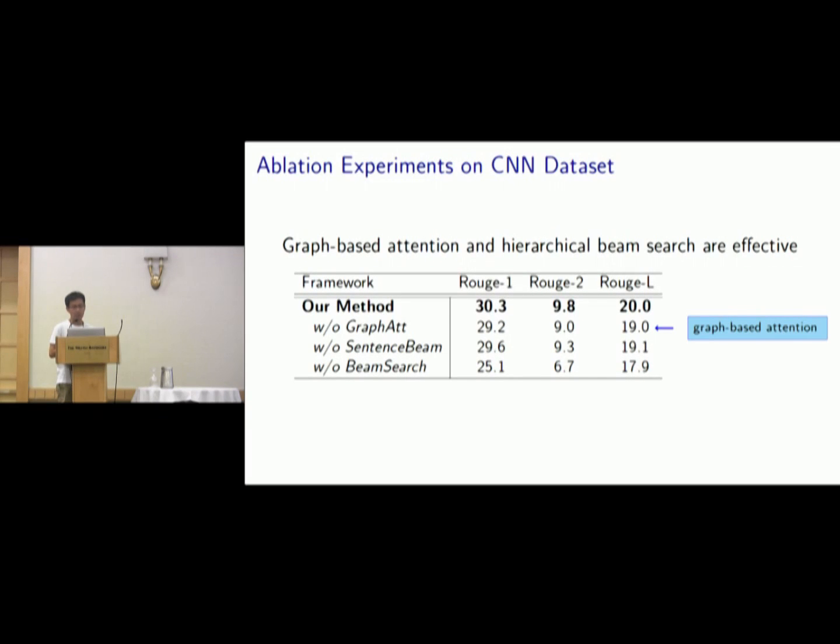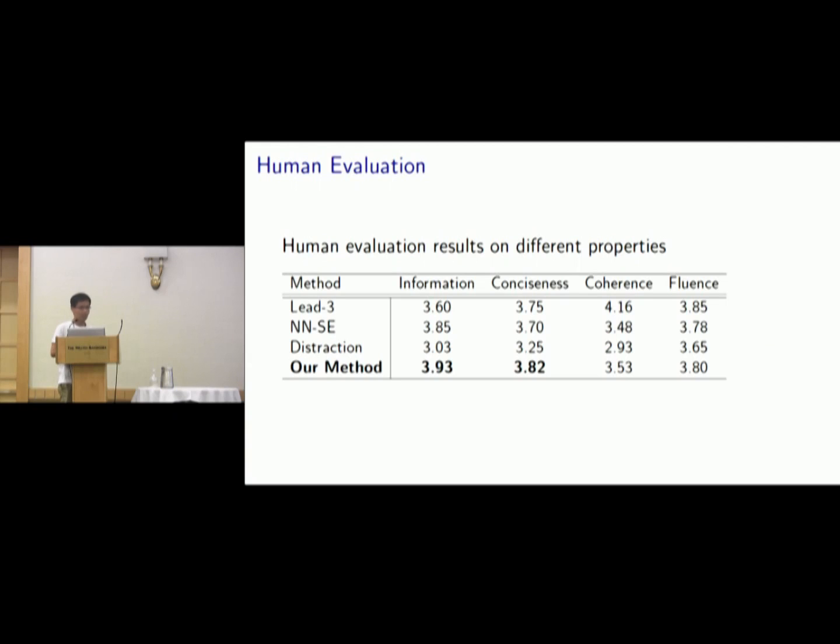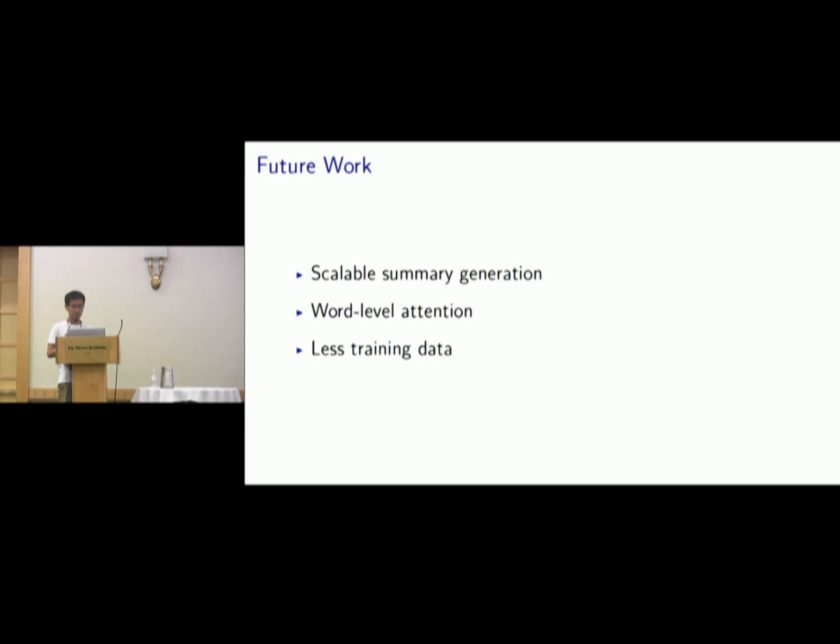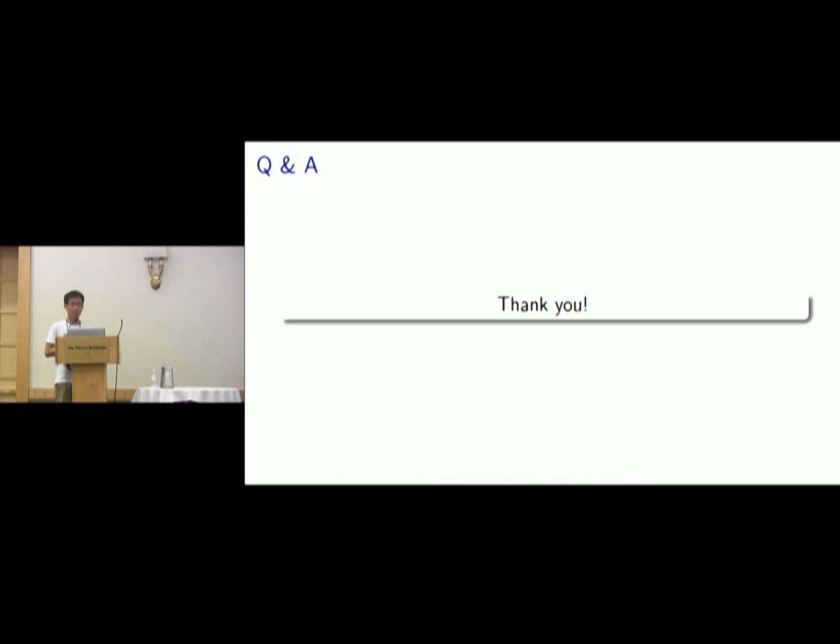Without the attention mechanism, the ROUGE-1 score will decrease by about one point. And the human evaluation shows that our method is able to produce better informativeness and consistency, and also good at coherence and fluency. So in conclusion, in this paper, we address the properties of abstractive summarization by proposing a graph-based attention mechanism to address the salient information and non-redundancy, and a decoding algorithm with a reference mechanism for better correctness, non-redundancy, and coherence. Some future work can be generating a scalable summary and adding word-level attention and investigating using less training data. So thanks for your attention.